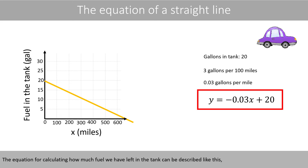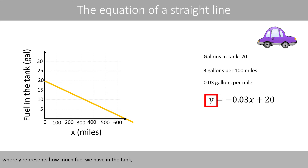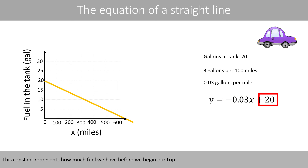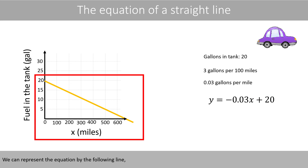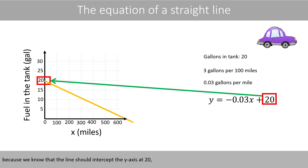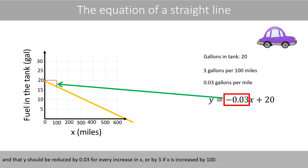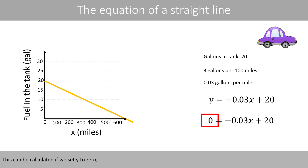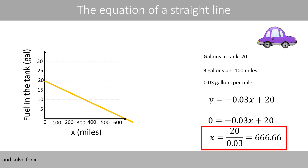The equation for calculating how much fuel we have left in the tank can be described like this, where Y represents how much fuel we have in the tank. This term represents that for each mile we drive, the fuel in the tank is reduced by 0.03 gallons. This constant represents how much fuel we have before we begin our trip. We can represent the equation by the following line, because we know that the line should intercept the Y axis at 20, and that Y should be reduced by 0.03 for every increase in X, or by 3 if X is increased by 100. We see that we can drive about 660 miles before we run out of fuel. This can be calculated if we set Y to 0 and solve for X.